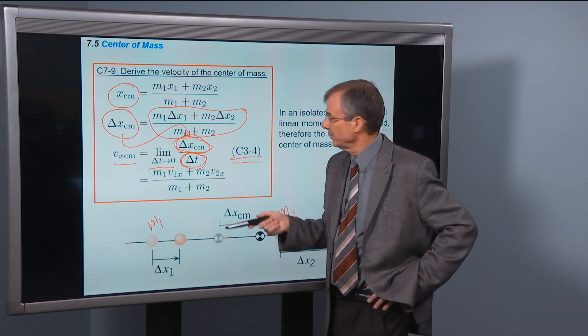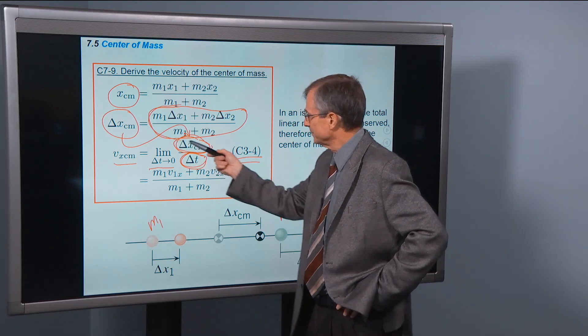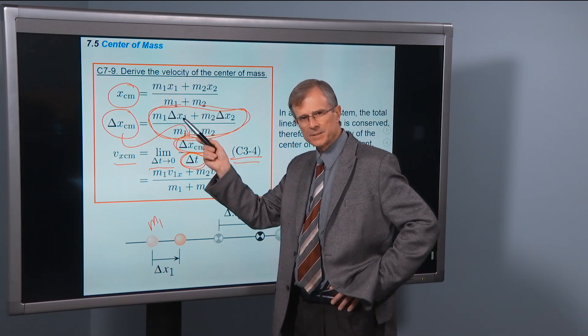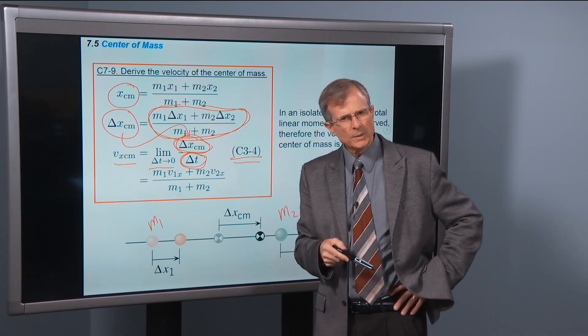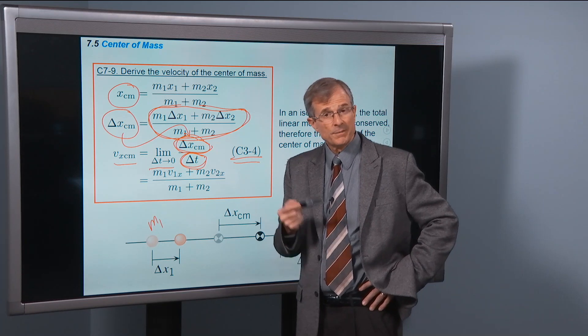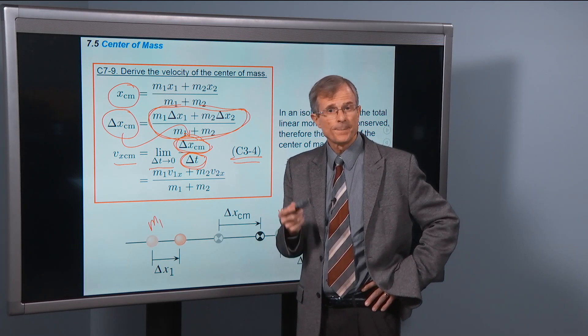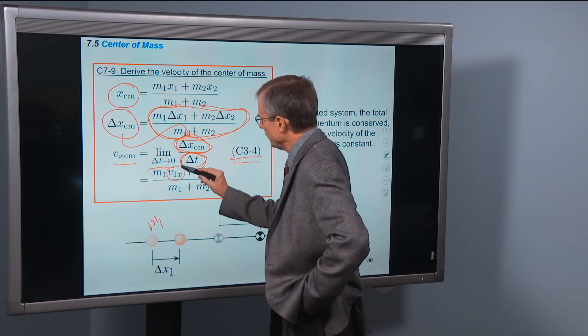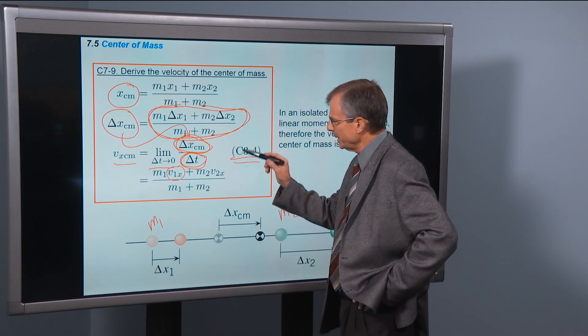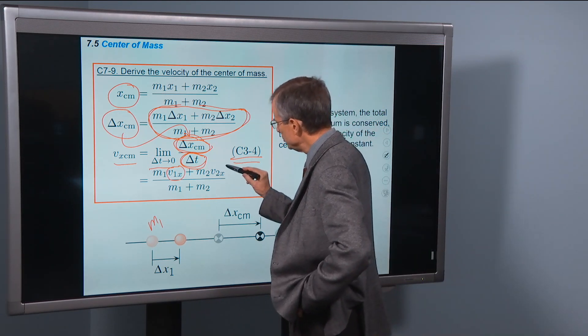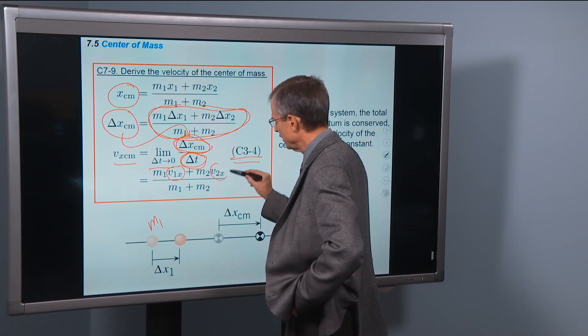Notice now, if we divide this by delta t, we'll have to divide delta x-one by delta t. But what's delta x-one divided by delta t in the limit of delta t goes to zero? That's just the velocity of mass one. Delta x-two divided by delta t in the limit of delta t goes to zero is v2x, the x component of v2.